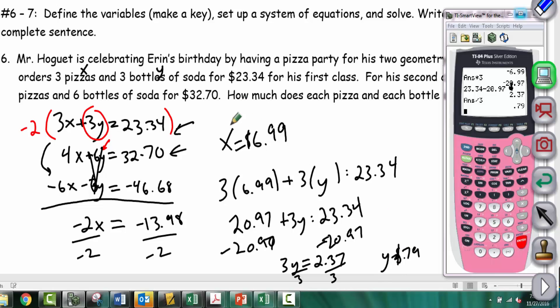One thing you have to do with word problems is answer in complete sentences. Each pizza costs $6.99 and each soda costs $0.79.